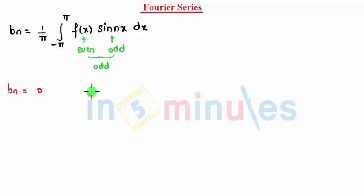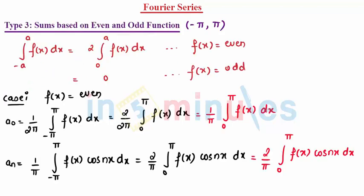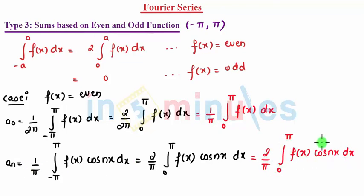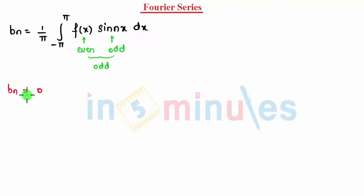So we got 3 formulas for the even case: a0 is 1 by pi times the integral from 0 to pi of f(x) dx; an is 2 by pi times the integral from 0 to pi of f(x) cos(nx) dx; and bn is 0. This was the case when your function is even.